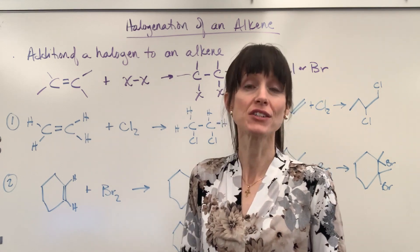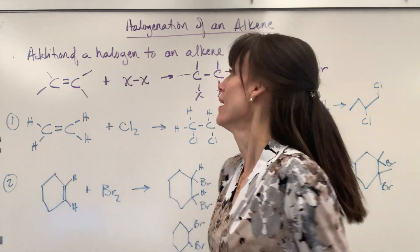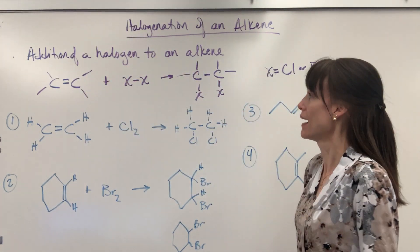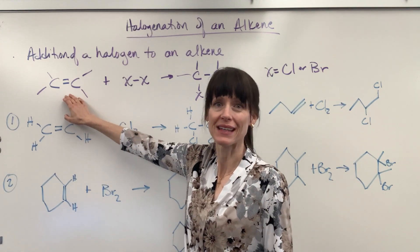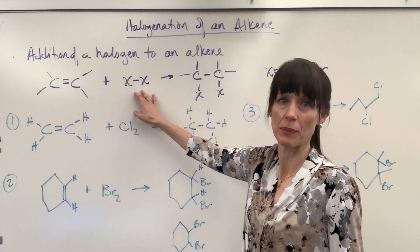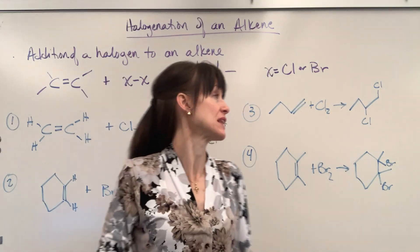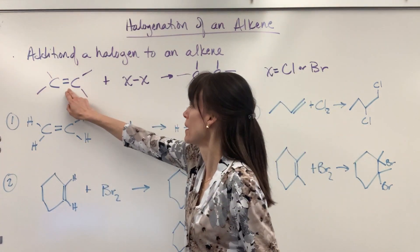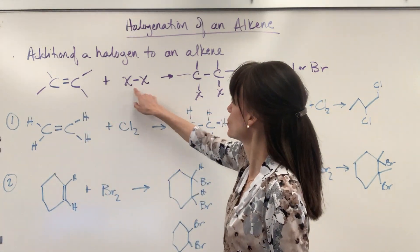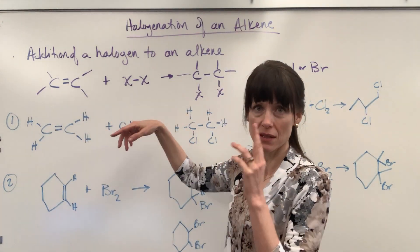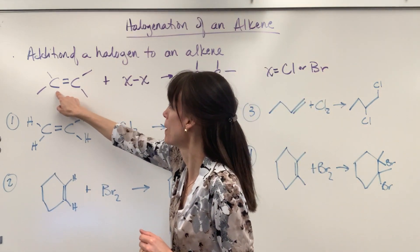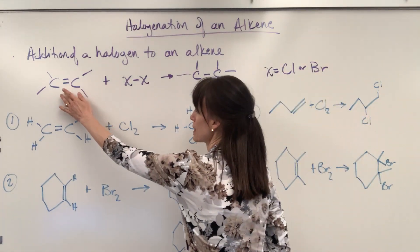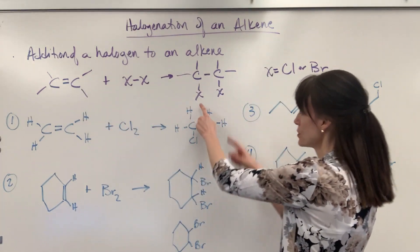Hi everybody, we're going to talk about the halogenation of an alkene. This is adding a halogen to an alkene. You're going to have your alkene plus the halogen — I put XX to represent the halogen. Specifically, that halogen is either going to be a chlorine or a bromine. That double bond is going to be removed and the two halogens in this diatomic bond are going to bond to the carbons. Break that double bond, add the halogen, and there you've got it.